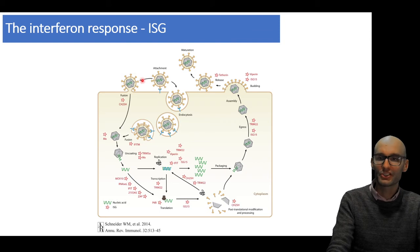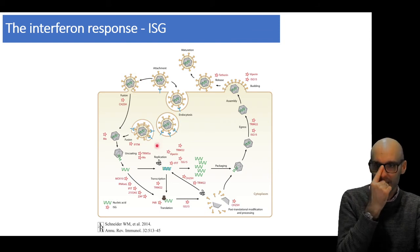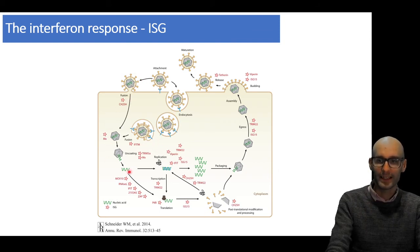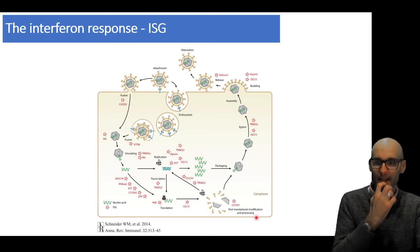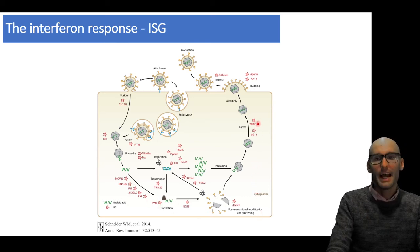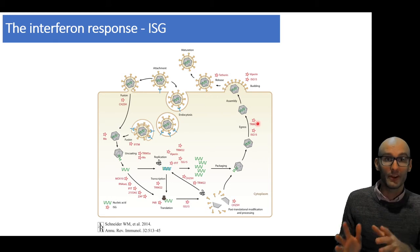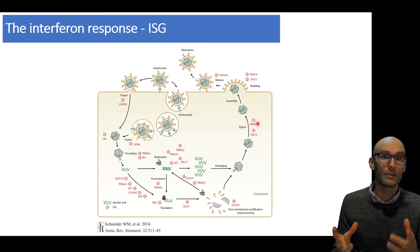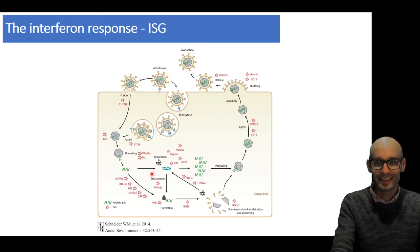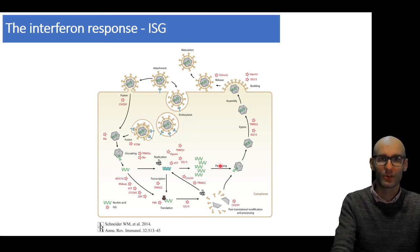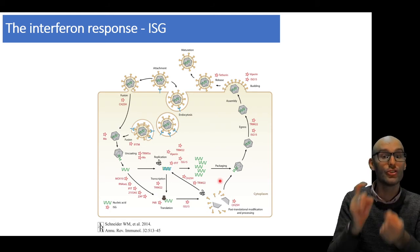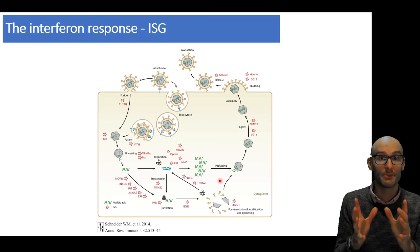And this is just a viral life cycle, and in the red here, in each of these little red stars, you can see here, all the way around here, those are different interferon stimulated genes that can block the viral life cycle. So you can see that our body attacks this viral life cycle at every point along this life cycle, and all these genes are turned on by their interferon receptor being activated.